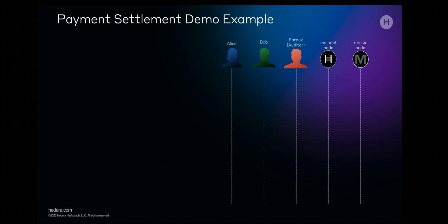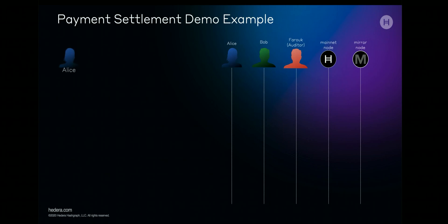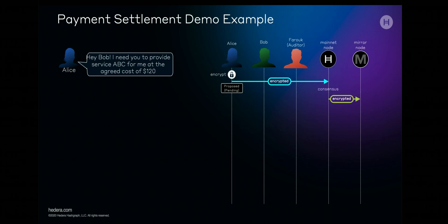Looking slightly deeper at the process, we can see how mainnet nodes, mirror nodes, and appnets interact. In this payment settlement example, parties propose and agree credits and debits through messages sent from the appnet. There are three subscribers: Alice and Bob, who exchange IOUs for payment — these could represent two airlines settling on code share agreements, hotels, banks, and so on — and our auditor, Farouk. When Alice wishes to transact with Bob, she does so by submitting an encrypted message to the HCS topic on a Hedera mainnet node. The Hedera mainnet node gossips to other nodes until final consensus is reached in just a few seconds, and the message has a fair timestamp.